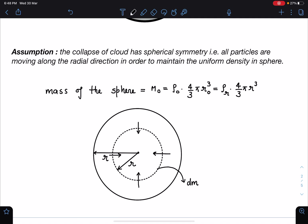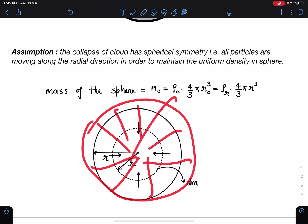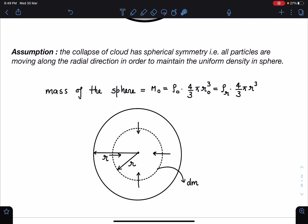I can say M0 is ρ0 into 4/3 π R0³ and at any R we can say for the uniform sphere, this mass will be ρ0 into 4/3 π R³. As this sphere is collapsing in a similar manner in all possible directions, it is moving towards the center.